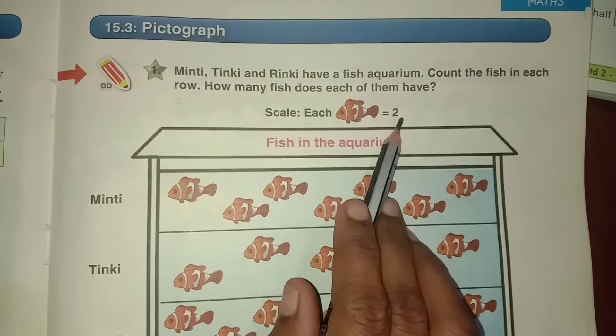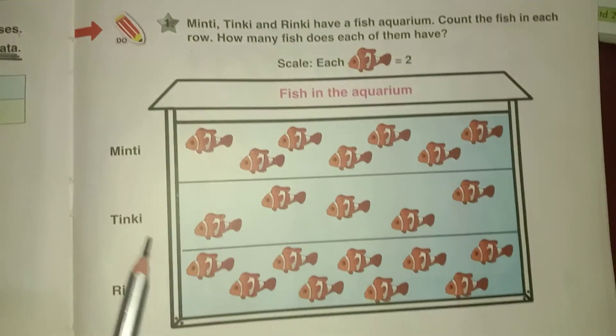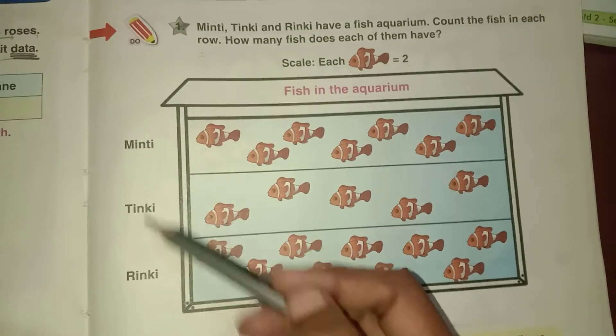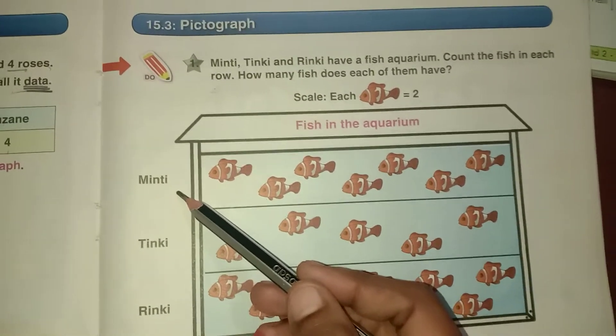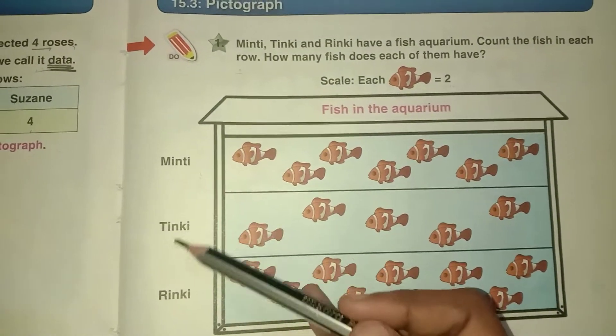Each fish is equal to 2. 1 fish means 2 fish. This is the fish aquarium here. Here they given this side here. They given labels means names here. Minty, Tinky, Rinky.